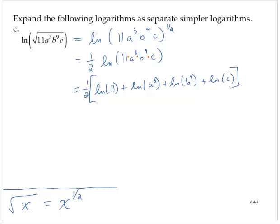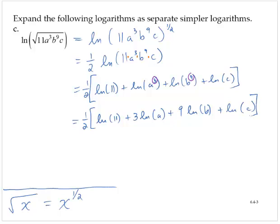Using the same rule as before, I can bring those powers in front of the individual logarithms as coefficients. So I have one half of the quantity: natural log of 11 plus 3 natural log a plus 9 natural log b plus natural log c.